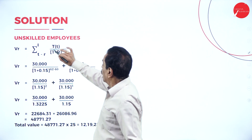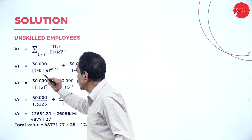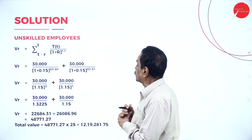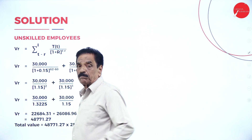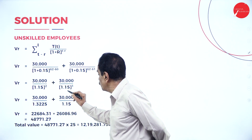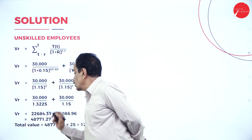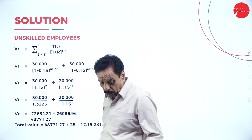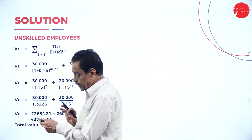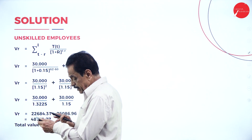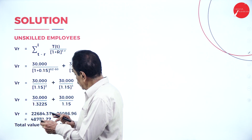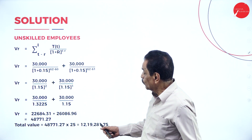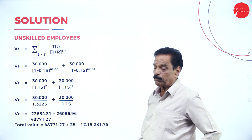For unskilled employees (average age 60, retirement age 62, discount rate 15%): 30,000 / 1.15^(62 minus 60) and 30,000 / 1.15^(62 minus 61), giving powers of 2 and 1. Calculations: 30,000 / 1.3225 = 22,684.31, and 30,000 / 1.15. The total for the unskilled employee group works out to 48,771.27.